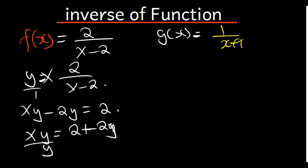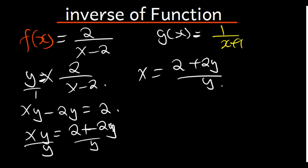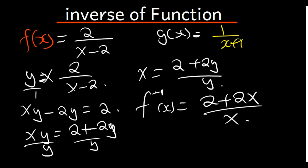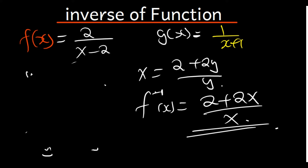So xy equals 2 plus 2y. I'll divide both sides by y, giving x equals (2 plus 2y) divided by y. Now where there is y, I replace it with x, so f inverse of x equals (2 plus 2x) divided by x. You can factor out 2 on top if you want, but this is our f inverse.